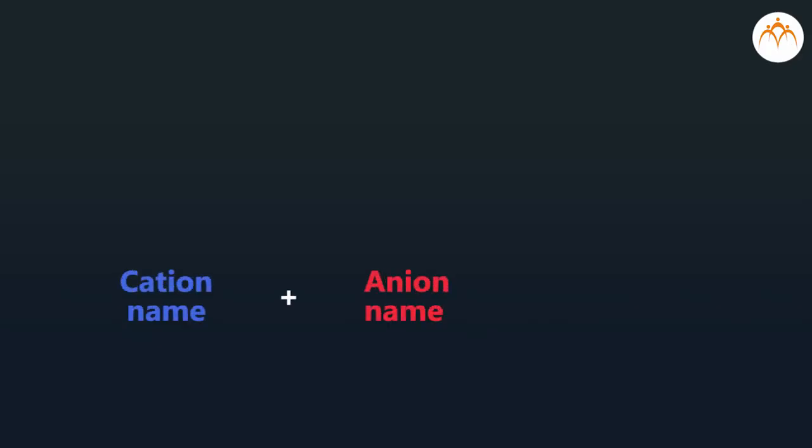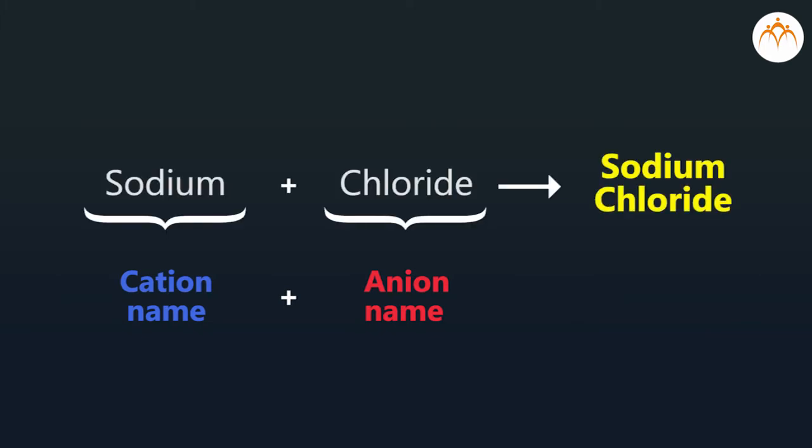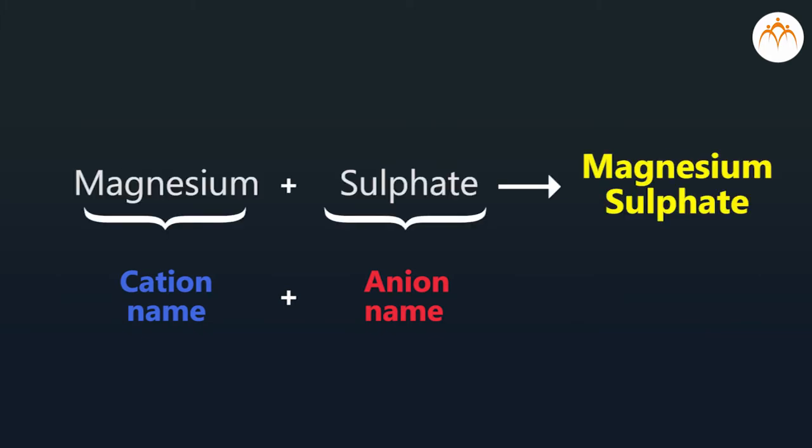We should write the chemical formula like this: cation name plus anion name. For example, sodium chloride, magnesium sulfate.